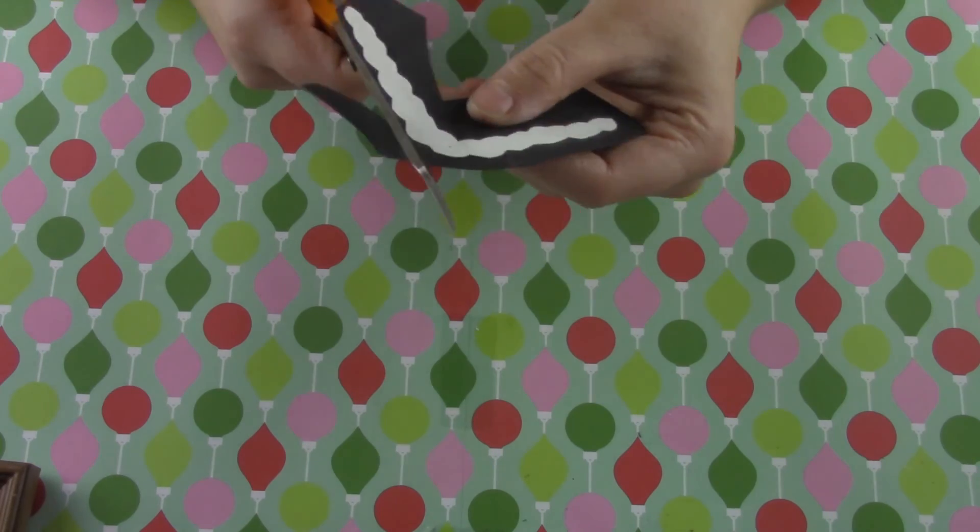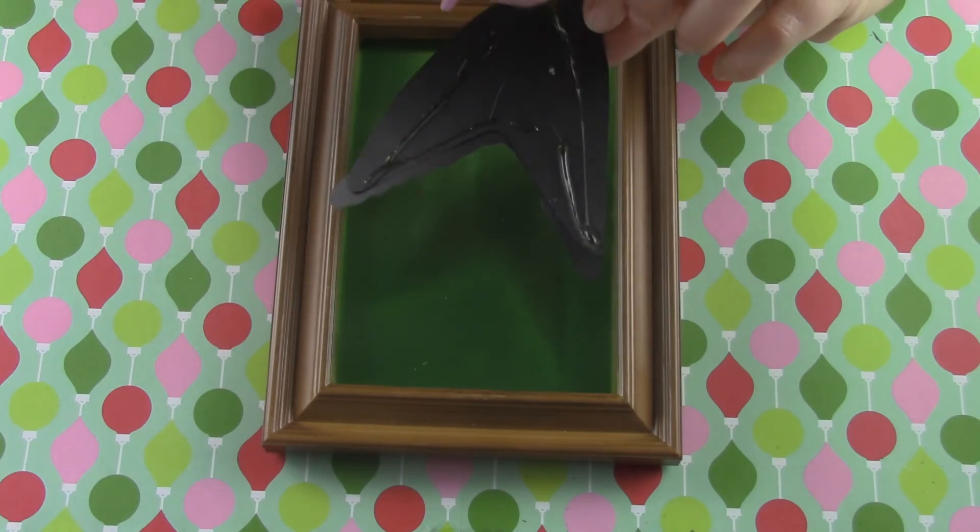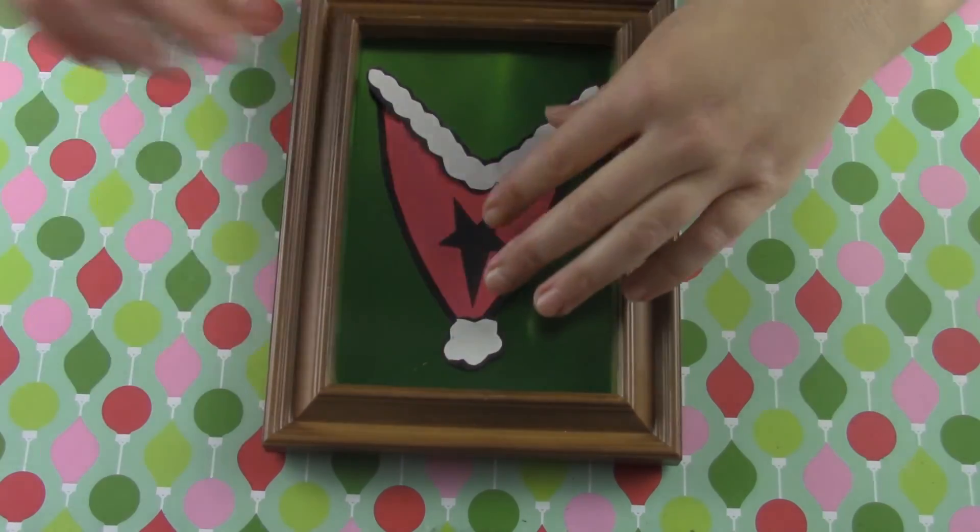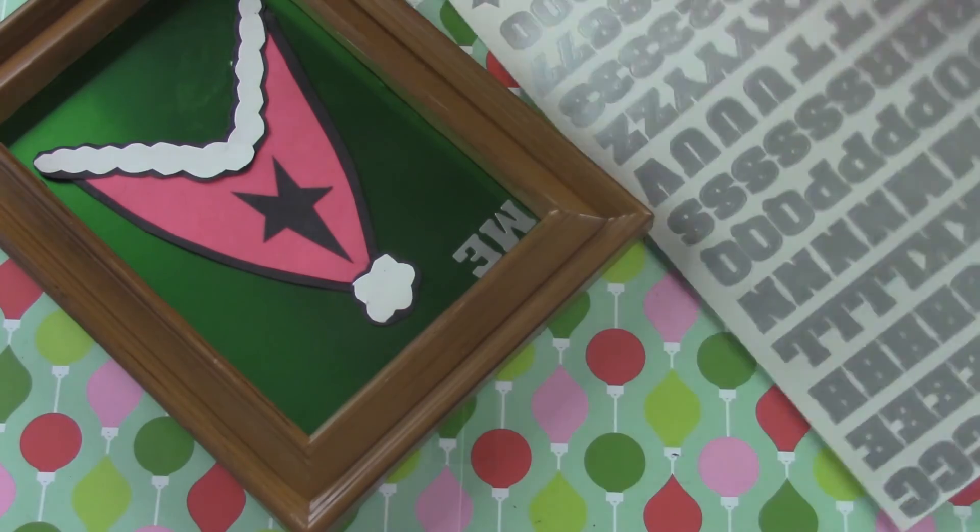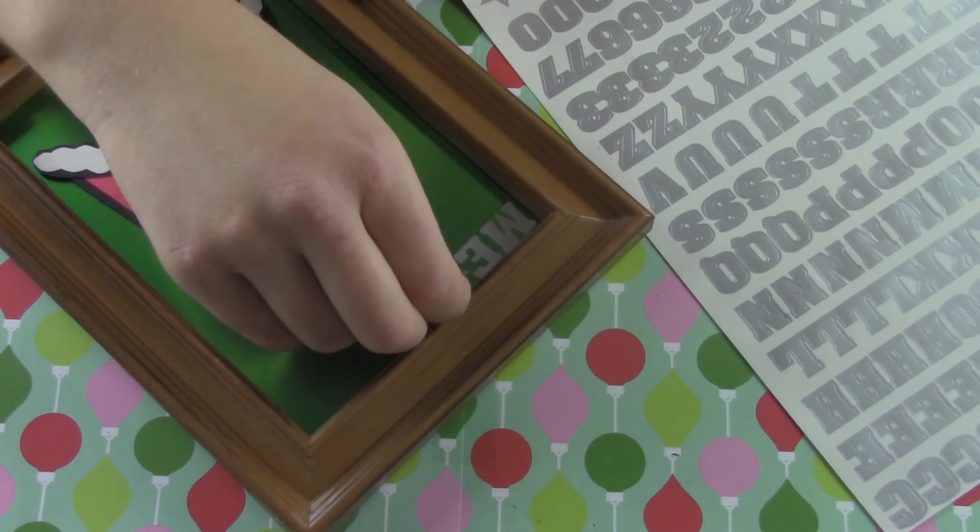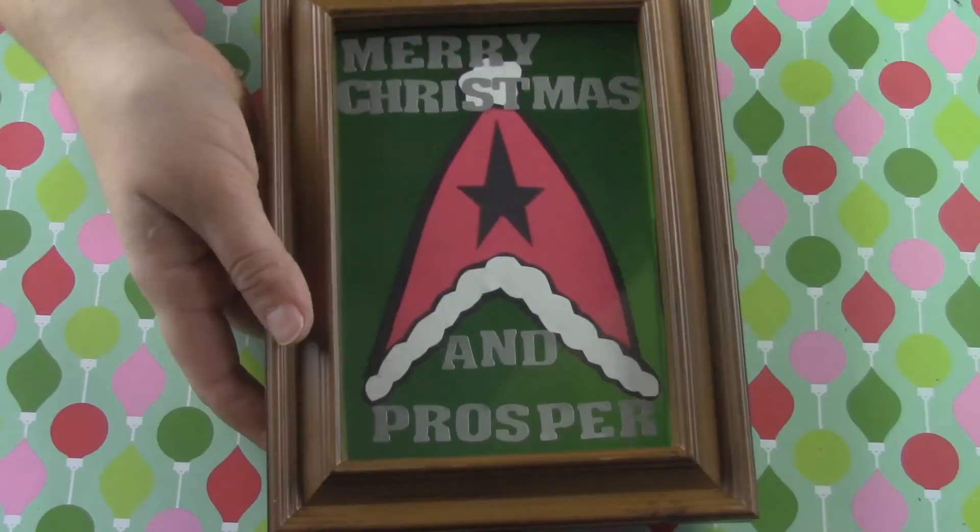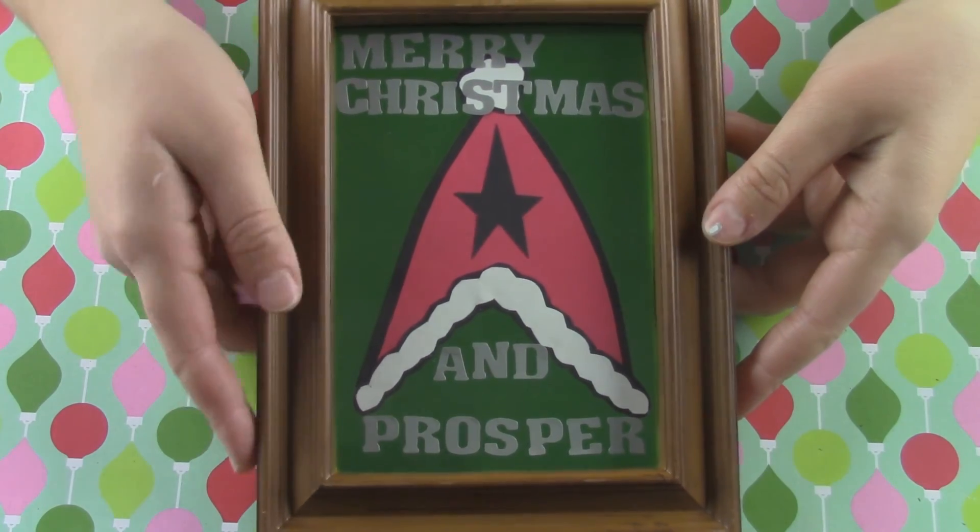You get it? We're making it into Santa's hat. Once that's all dry you can go ahead and glue that onto the background in your picture frame. It was kind of plain so I decided that I needed to write something in the frame as well so I decided to write something Christmas-y and Star Trek-y. So I wrote Merry Christmas and Prosper. You know, live long and prosper.